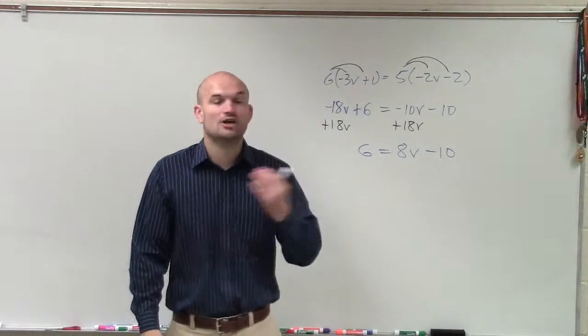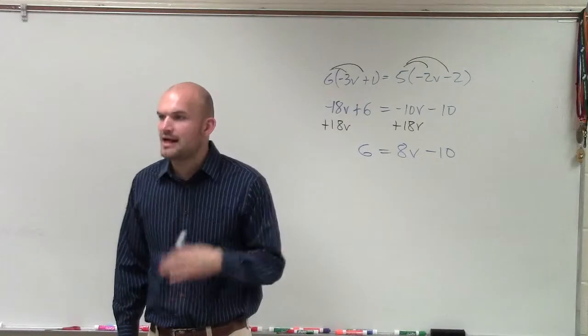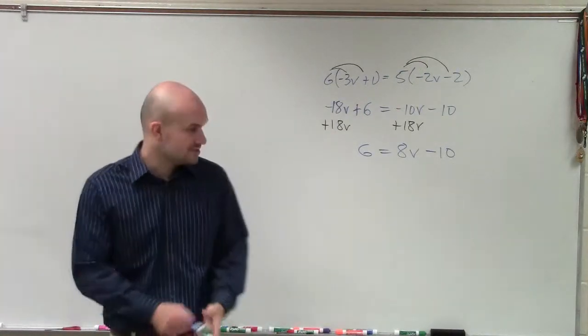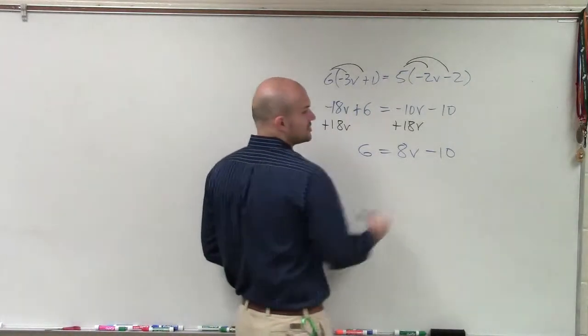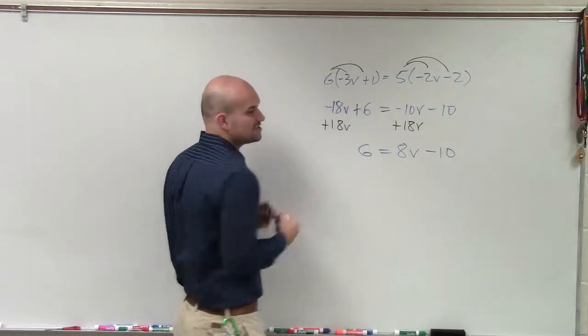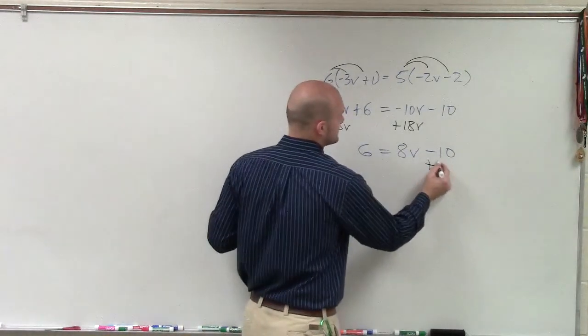Now, two-step equations—we just undo addition and subtraction first, and then we undo multiplication and division. To undo addition and subtraction, we notice that my B is being subtracted by 10, so I add 10.